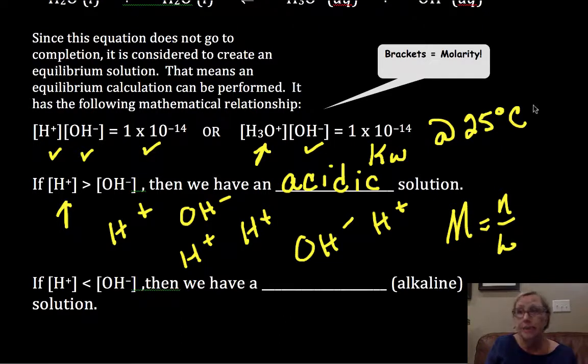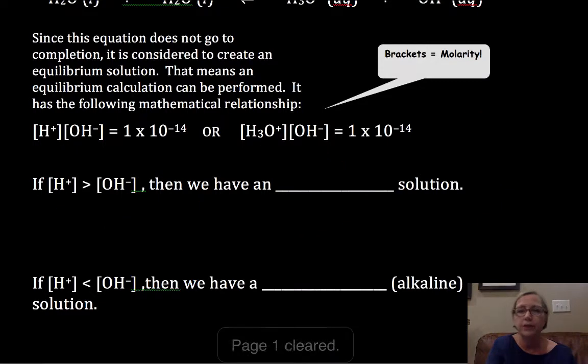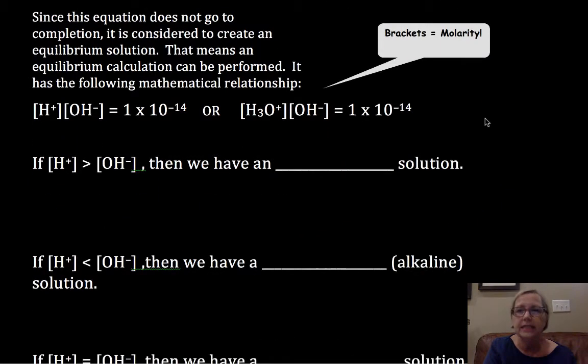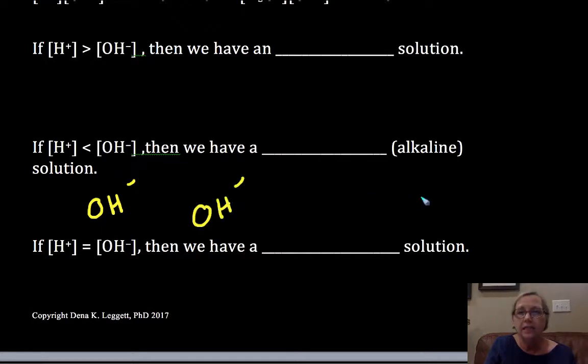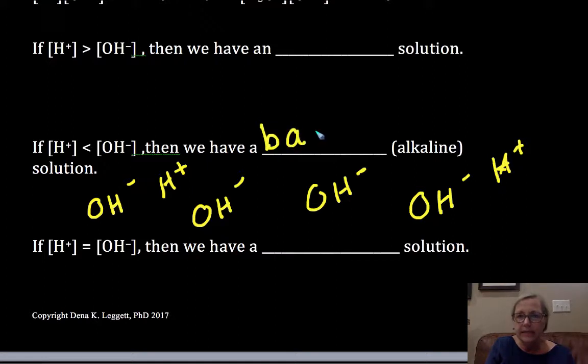So let's take a look at a basic solution then. If I have a solution in which my hydroxide ions dominate, now this would not be pure water, there would have to be something else in there that would react to form hydroxides. If indeed my hydroxides dominate over my H+, then we have a basic solution, also called an alkaline solution. Now if H+ equals OH-, then we have a neutral solution.